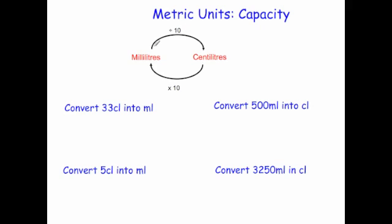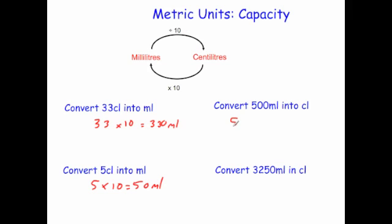Finally, let's look at converting milliliters and centiliters. Convert 33 centiliters into milliliters: multiply by 10, so 33 times 10 equals 330 milliliters. Convert 5 centiliters into milliliters: 5 times 10 equals 50 milliliters. Convert 500 milliliters into centiliters: divide by 10, so 500 divided by 10 equals 50 centiliters. Convert 3250 milliliters into centiliters: 3250 divided by 10 equals 325 centiliters.